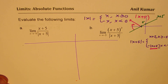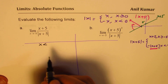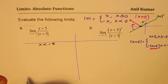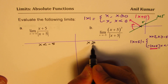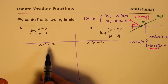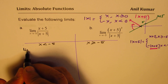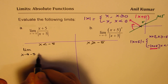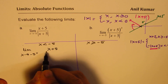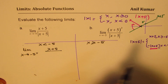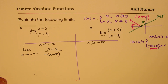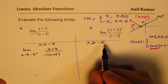One part is when x is less than the value that makes the expression 0 — in this case, minus 5. On the left side, approaching from the left, we write: limit as x approaches negative 5 from the left. The denominator absolute value of (x+5) is written as negative of (x+5).